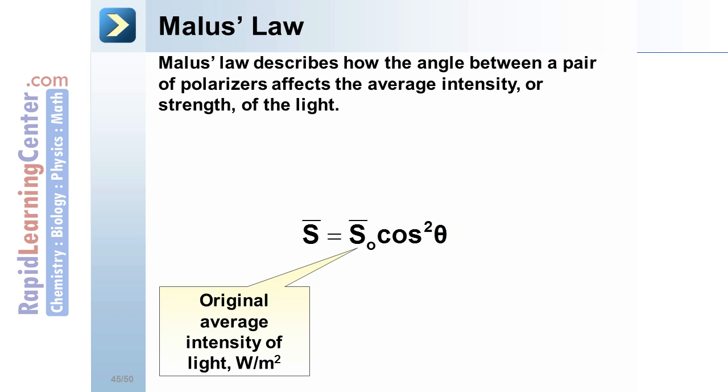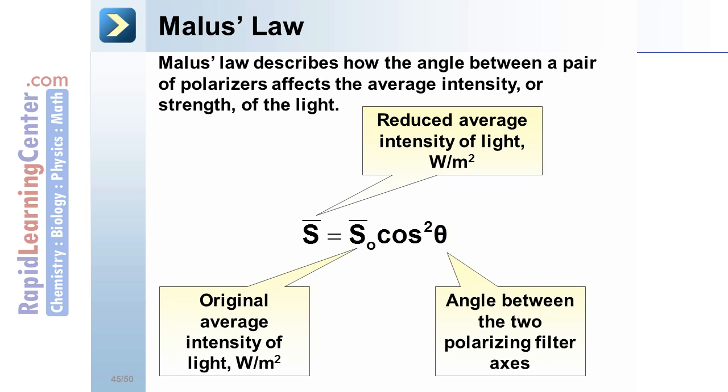The S0-bar is the original average intensity of light in units of watts per square meter. The S-bar is the reduced average intensity of light in watts per square meter. And the angle theta is the angle between the two polarizing filter axes.